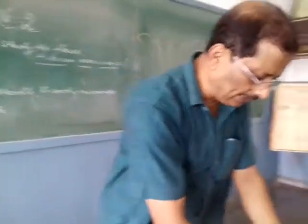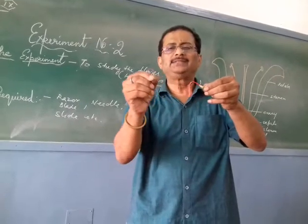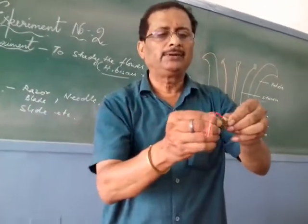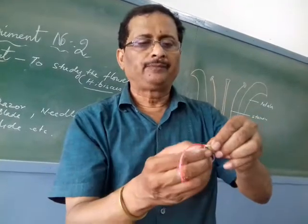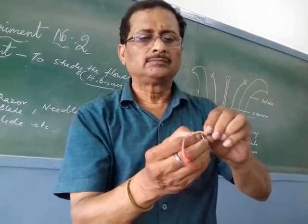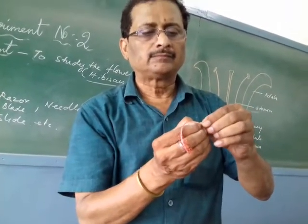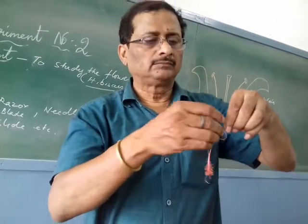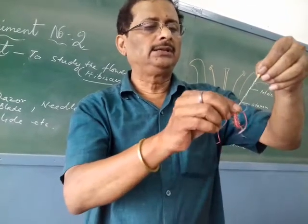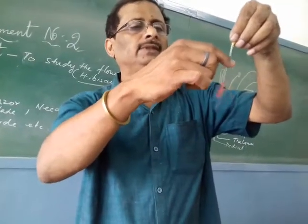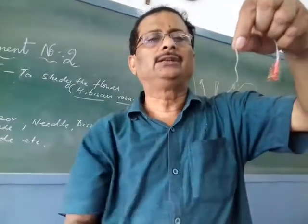Now I will show you the stigma and style inside. You can see the monodelphous stamens — if you peel off the outer part, I am peeling off the staminal tube, the monodelphous stamens, and inside you can see the style — the green-white colored structure that runs through the center of this tube.